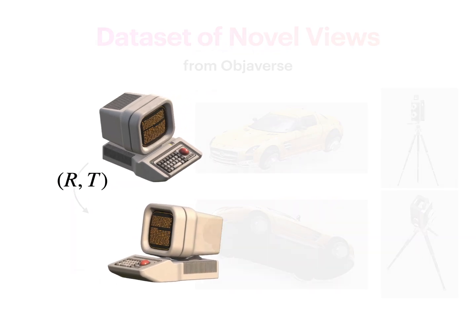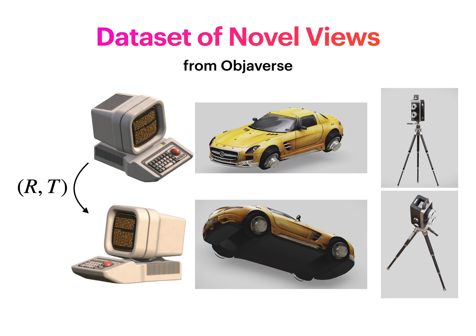This model is then fine-tuned on a 3D dataset, Objaverse. For each 3D object, we randomly sample two views — one as input and one as output — to form a dataset of novel views, which is used for fine-tuning.